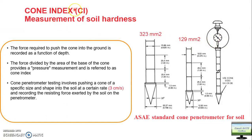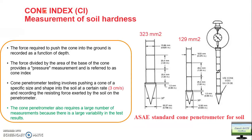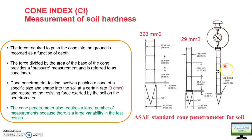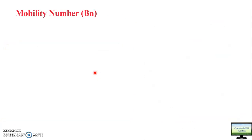The force divided by the area of the cone gives you the cone index. Since force per unit area is pressure, cone index is essentially a pressure — measured in kilopascals or Newton per mm². For a manual cone penetrometer, you need many iterations to ensure the rate is exactly 3 cm per second, which is difficult. To avoid this, hydraulic-operated cone penetrometers are now available. However, manual cone penetrometers are still widely used.